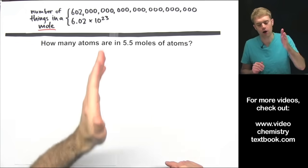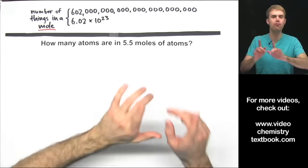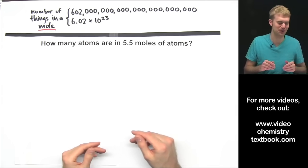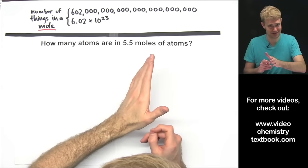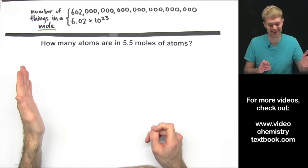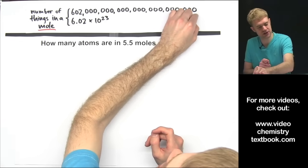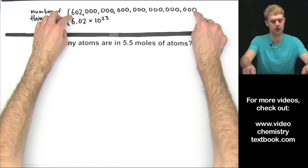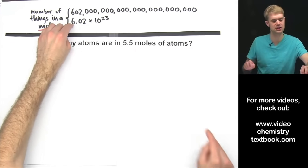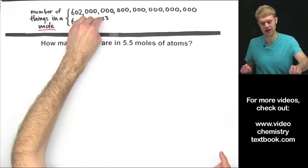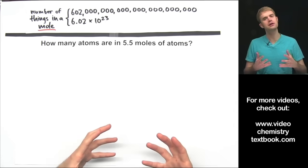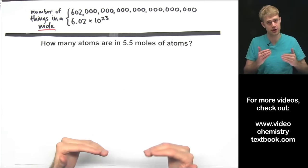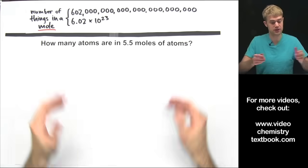How many atoms are in 5.5 moles of atoms? We're talking about moles and atoms here, so let's refresh our memory about moles. A mole is like a dozen, but there are 12 things in a dozen and there are 602 hexillion things in a mole. We often abbreviate this number with all these zeros — 602 hexillion — as 6.02 times 10 to the 23rd. Moles can be a little bit tricky at first, so I want to keep talking about the similarity to dozens as we work through this first problem.